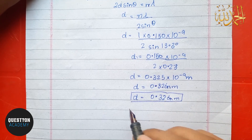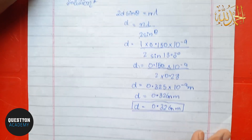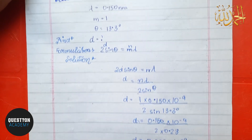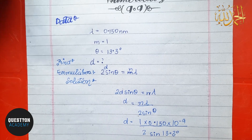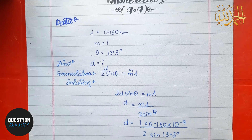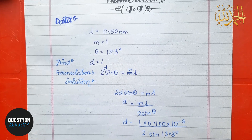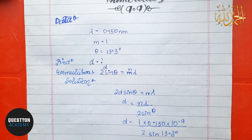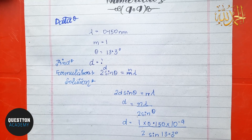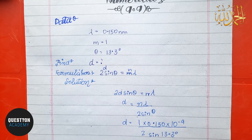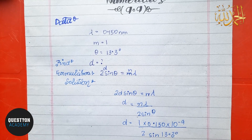Thank you very much. That was the answer to numerical 9.9. Now we have the last numerical which is 9.10, and we will cover it in our next video, after which our chapter number 9 numericals will be complete.